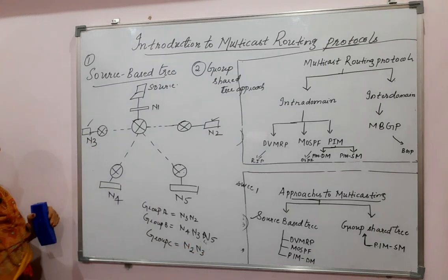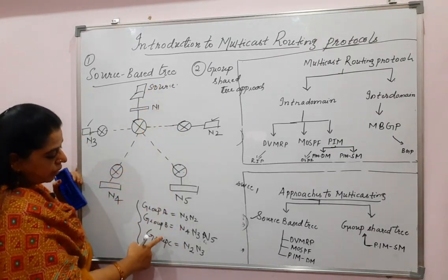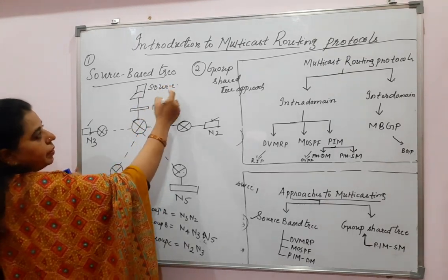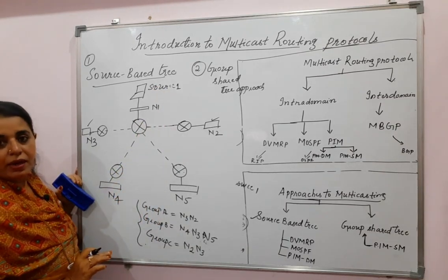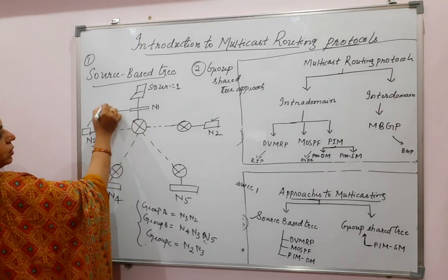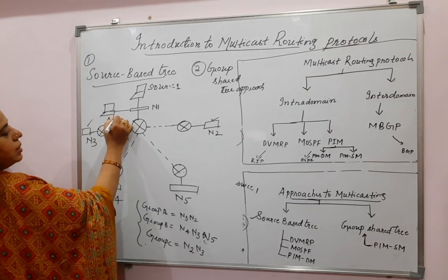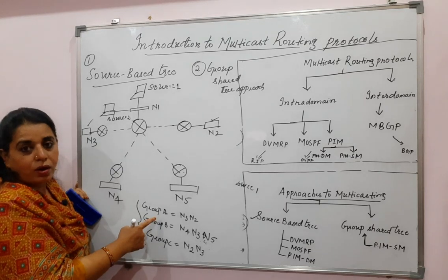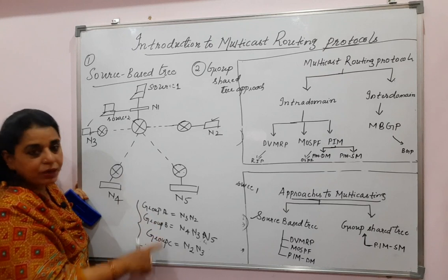With three groups, source 1 should have trees: source 1 to group A, source 1 to group B, and source 1 to group C. If there is also a source 2, it should also have paths to reach group A, group B, and group C.